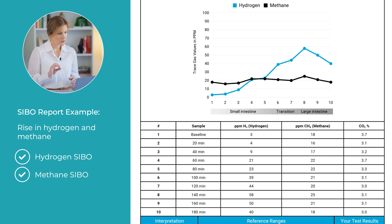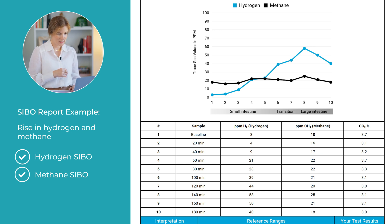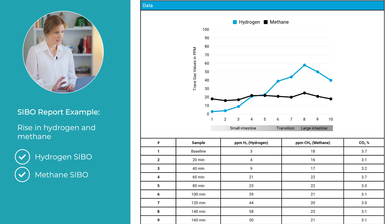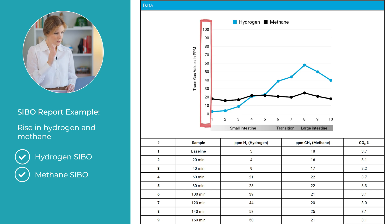PPM stands for parts per million, which is a way to measure the concentration of gases in your breath. It's an important measure because it quantifies how much hydrogen or methane gas is being produced by bacteria or archaea in your gut, and the higher the number, the more gas those bacteria and archaea are producing. In addition to the table, most SIBO breath test reports include a graph that plots gas levels against time, with time intervals on the horizontal x-axis and the concentration of gases in parts per million on the vertical y-axis.